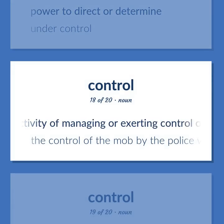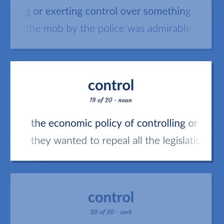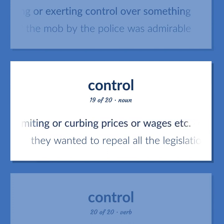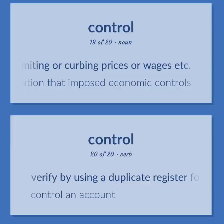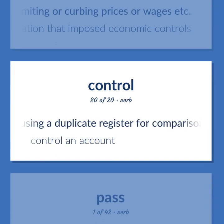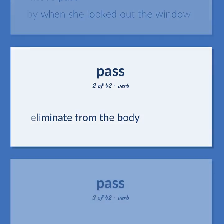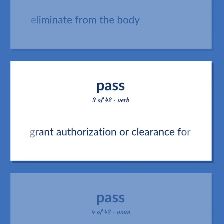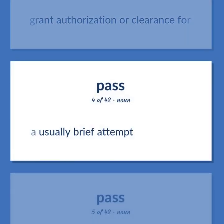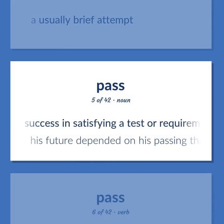The activity of managing or exerting control over something — the control of the mob by the police was admirable. The economic policy of controlling, limiting, or curbing prices or wages, etc. — they wanted to repeal all the legislation that imposed economic controls. Verify by using a duplicate register for comparison — control an account. Move past — a black limousine passed by when she looked out the window. Eliminate from the body. Grant authorization or clearance for. A usually brief attempt. Success in satisfying a test or requirement — his future depended on his passing that test.